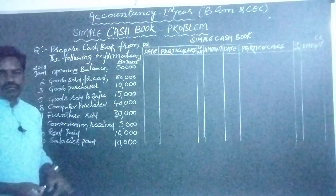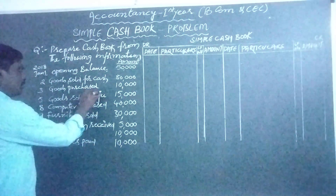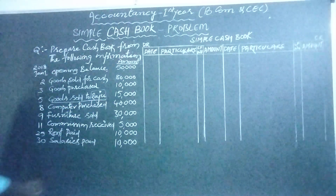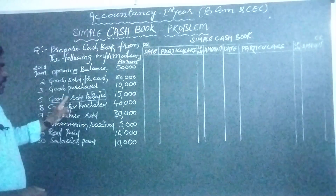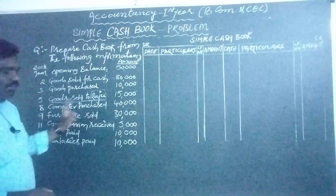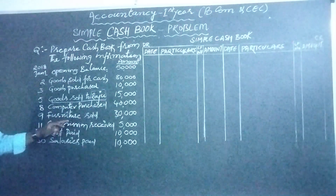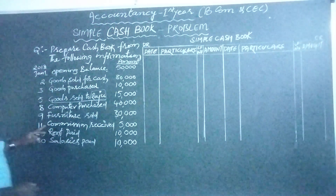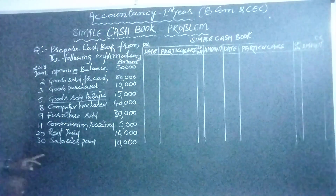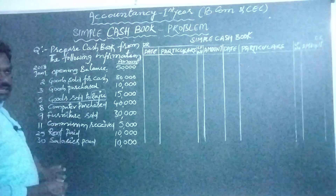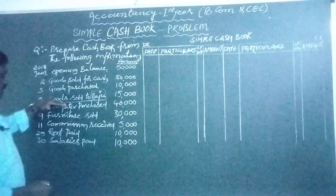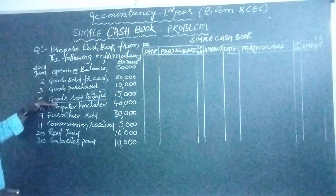January 5th — goods sold to Raju rupees 15,000. Here a person's name is given, so it is a credit transaction. Underline it to highlight it as a credit transaction because we must not record it in the cashbook. Next: computer purchased — cash transaction rupees 40,000. Furniture sold for cash rupees 30,000. Commission received in the form of cash rupees 5,000. Rent paid rupees 10,000. Salaries paid rupees 10,000. So there is only one credit transaction — the January 5th transaction — and all others are cash transactions.